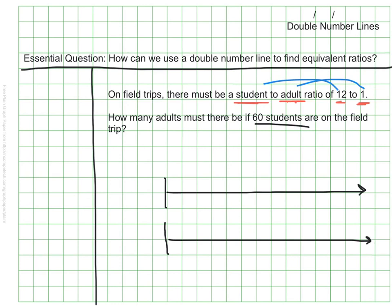Here I have started our setup for our double number line. Notice that the end of these lines have little arrows. It's because this could go on forever, and I could use this to scale up infinitely if I need to figure out any value with an equivalent ratio for my 12 to 1.